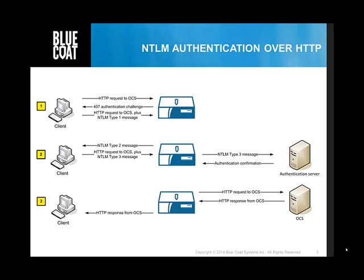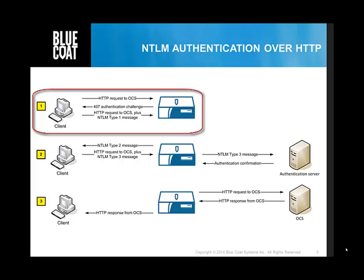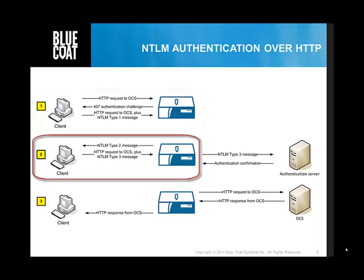NTLM authentication over HTTP. The process begins when a client makes a request to the proxy SG, which for the purposes of this example is operating in explicit proxy mode. The proxy SG replies with a 407 HTTP response code, which prompts the client to resend the request, this time including the authentication credentials. The client resends the original request, this time including the type 1 message encoded in base 64. The proxy SG responds to the client with the type 2 message. The client receives the type 2 message, which contains the challenge, and calculates, using the user's password, the type 3 message for that challenge.